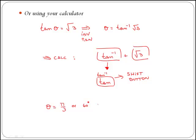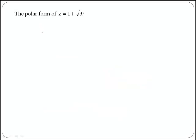In this case, make sure that you read your answer in the right units, as your calculator can work in both degrees and radians. If we now compile all the information obtained, we know that the modulus is equal to 2 and the argument is equal to pi over 3.